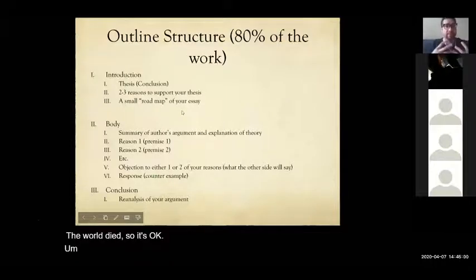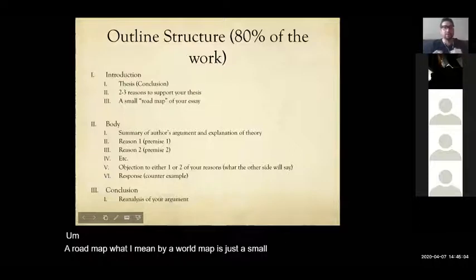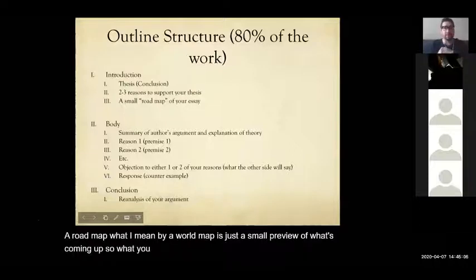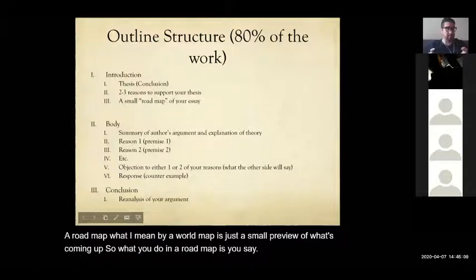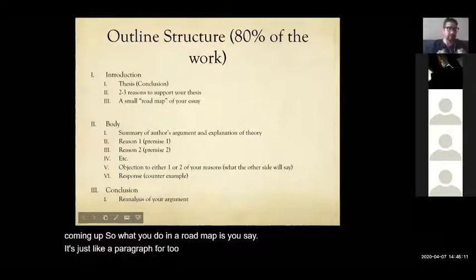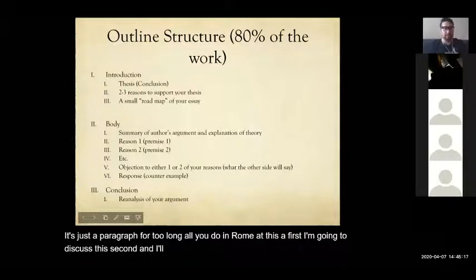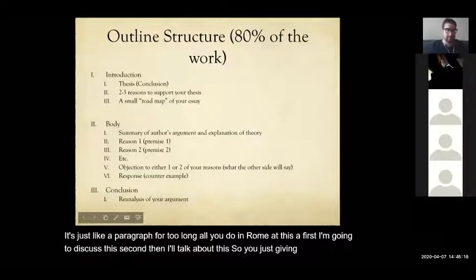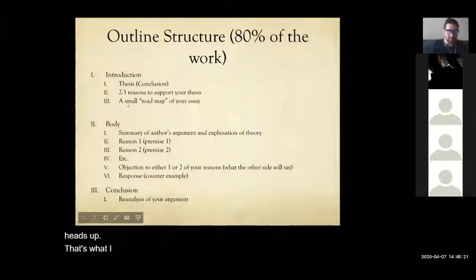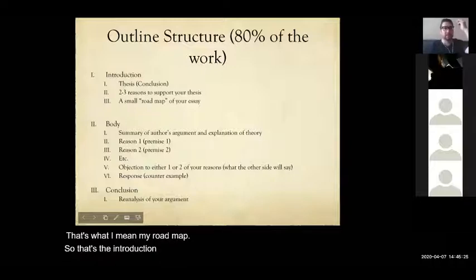A roadmap, what I mean by a roadmap is just a small preview of what's coming up. So what you do in a roadmap is you say, it's just like a paragraph or two long. All you do in a roadmap is say, first, I'm going to discuss this. Second, then I'll talk about this. And third, you're just giving the reader a heads up. That's what I mean by roadmap. So that's the introduction, the thesis, reasons, and then what's coming up.